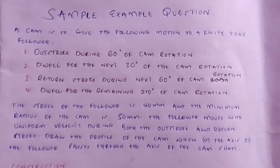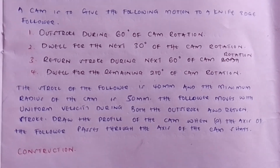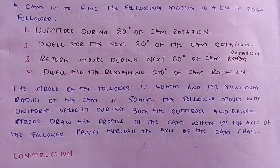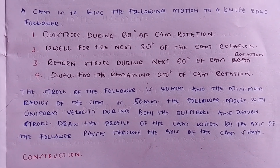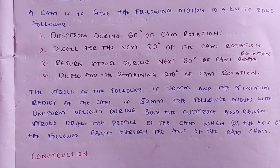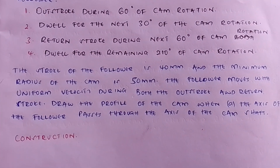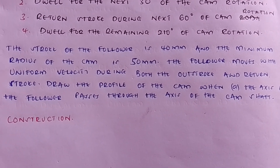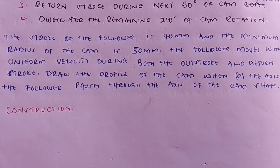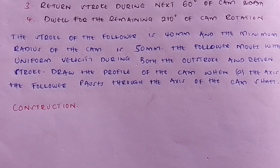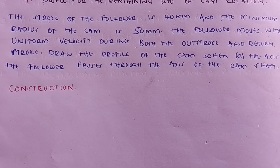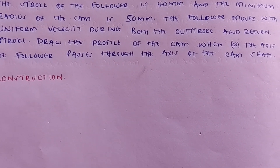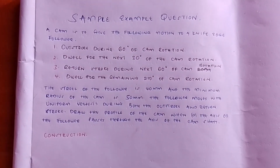The question asks: a cam is to give the following motion to a knife-edge follower. Outstroke during 60 degrees of cam rotation, dwell for the next 30 degrees, return stroke during the next 60 degrees of rotation, dwell for the remaining 210 degrees of cam rotation. The stroke of the follower is 40 millimeters, and the minimum radius of the cam is 50 millimeters. The roller moves with uniform velocity during both the outstroke and the return stroke. Draw the profile of the cam when the axis of the follower passes through the axis of the camshaft.